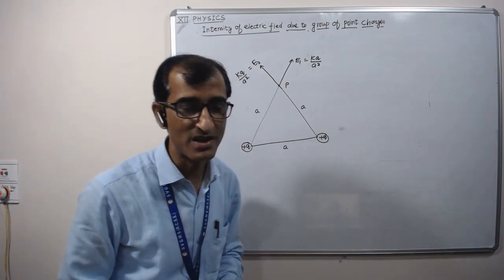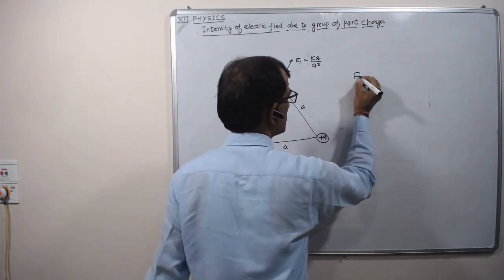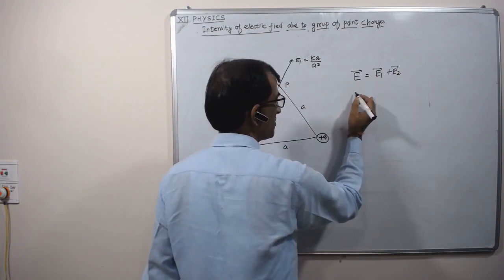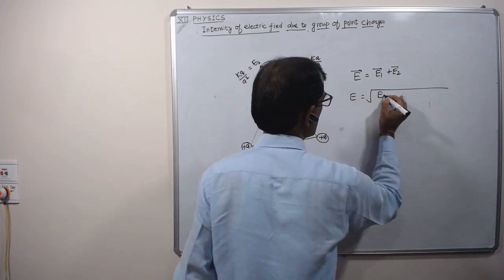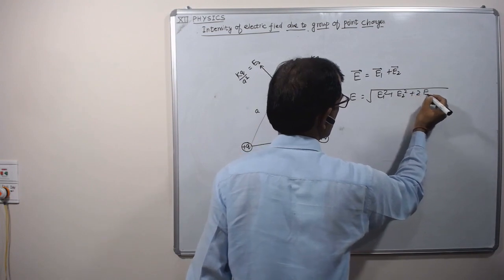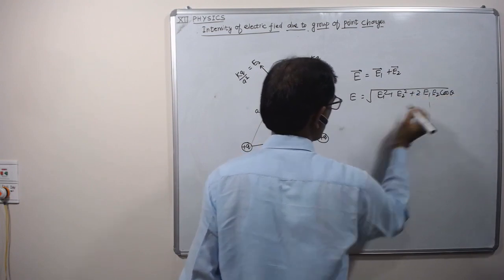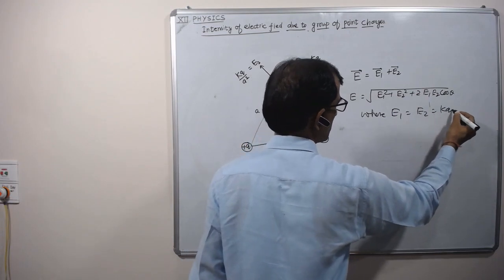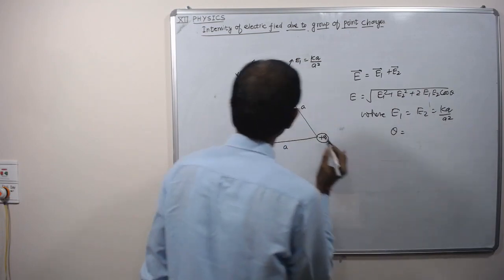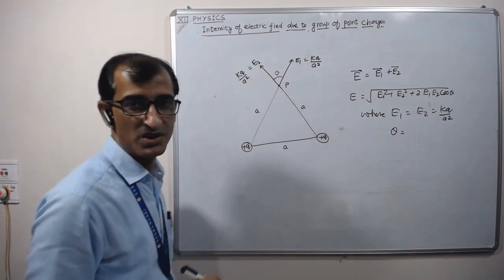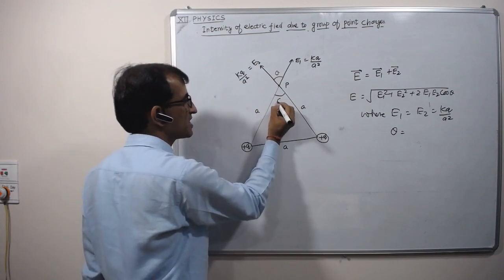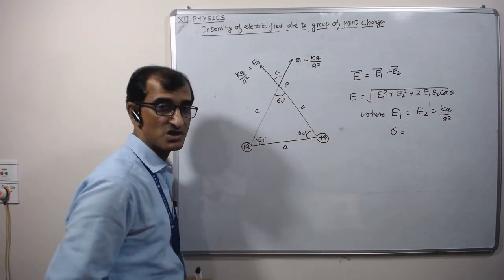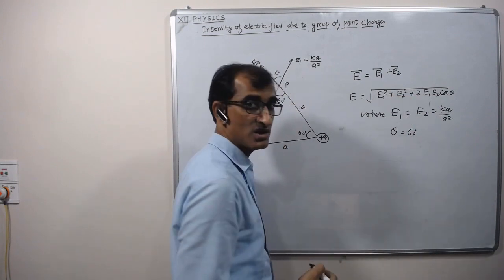Find out total electric field at P. Electric field is a vector quantity, so the resultant electric field will be the vector sum of the two intensities. The magnitude of the sum of two vectors is given by √(e1² + e2² + 2·e1·e2·cosθ), where e1 = e2 = kq/a², and theta is the angle between the directions of the two fields e1 and e2. This angle equals 60° because each angle of an equilateral triangle is 60°.